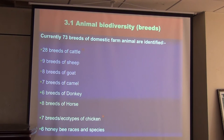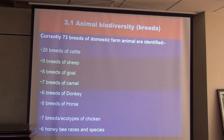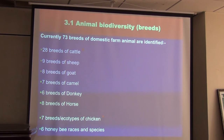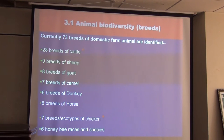Identification and characterization results show we have around 73 breeds of domestic animals, including 28 breeds of cattle, 9 breeds of sheep, 8 breeds of goat, 7 breeds of camel, plus donkey, horse, and various types of chicken and honey bee races and species. However, this is not exhaustive — characterization and identification work is still ongoing by us and other stakeholders.